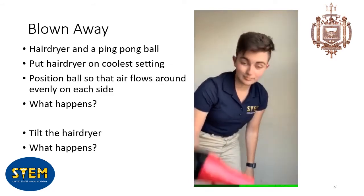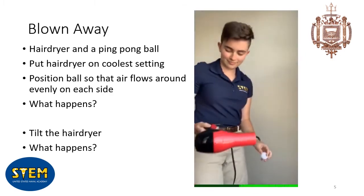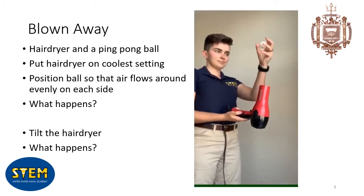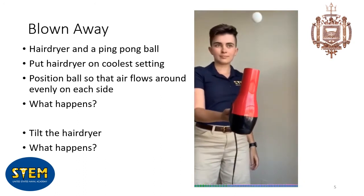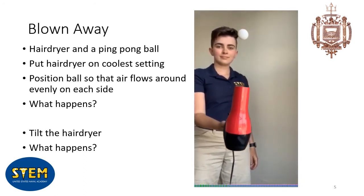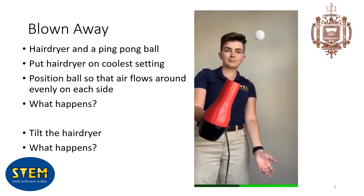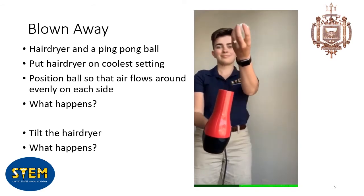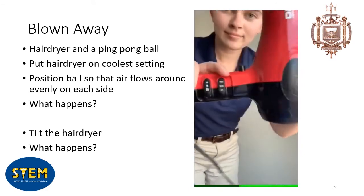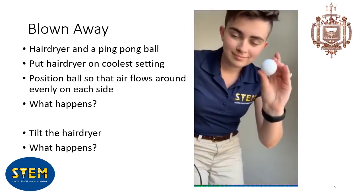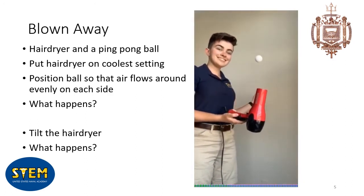Another exercise we can do to demonstrate Bernoulli's principle involves a hair dryer and a ping pong ball. In this case, I'll be using a styrofoam ball. Set the hair dryer to its coolest setting and position the ball carefully over it so that the air flows evenly around the ball on each side. When you let go of it, the ball should float in the air. This is because the forces on the ball are balanced — gravity is pulling the ball down while the air is pushing it up. Now what you can do is actually tilt your hair dryer at an angle, and what you'll notice is that even when the hair dryer isn't directly below it, the ping pong ball stays in the stream of air.